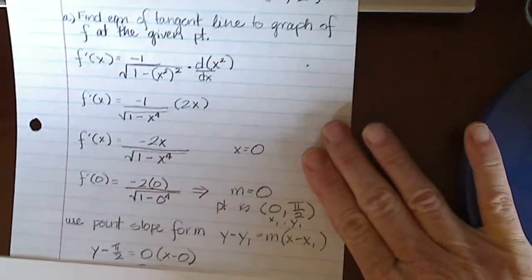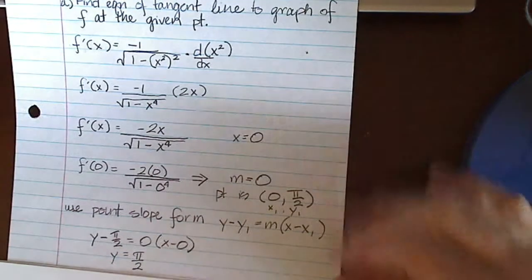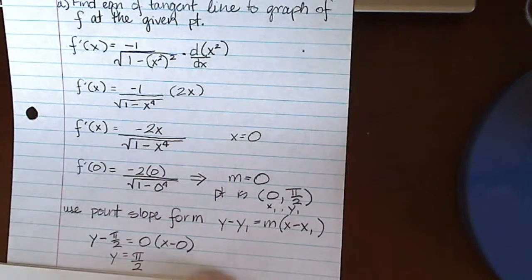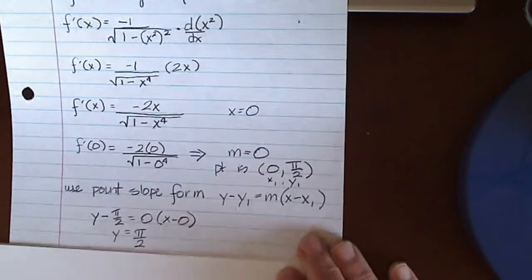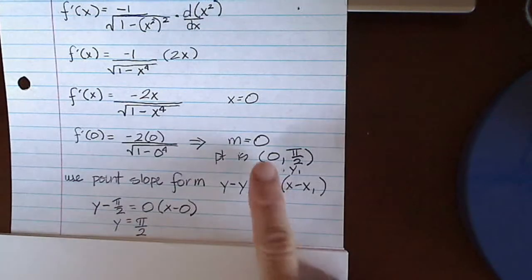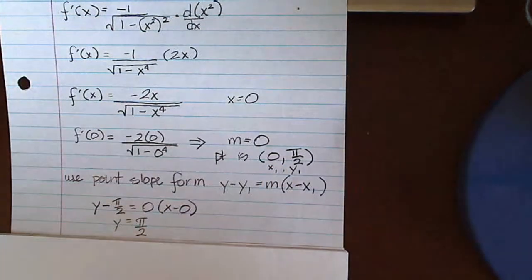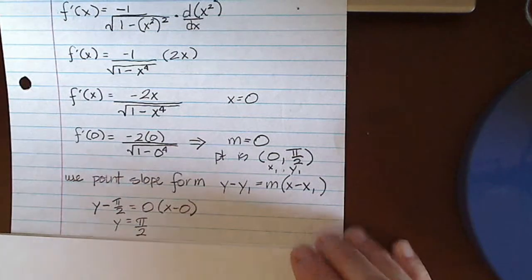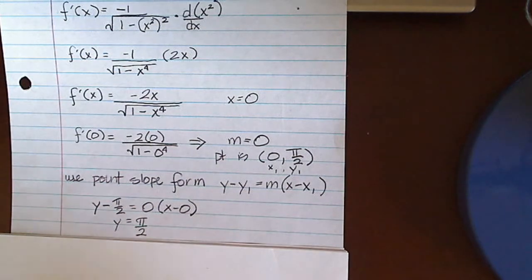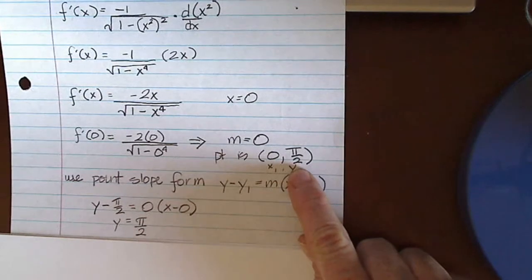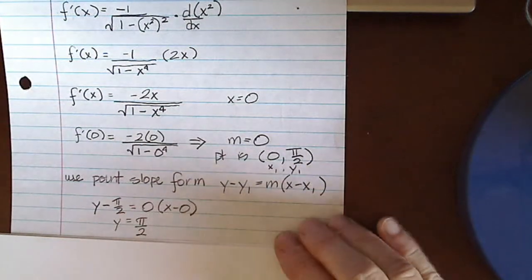Well, that's not surprising because we had a slope of zero, so we knew it was going to be a horizontal line, and it should be of the form y equals a constant where it matches this value. Check. That's what we got.